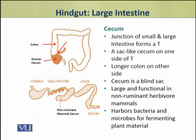In mammals, bacteria and microbes living in the cecum help digest plant materials. In non-ruminants, the stomach does not have a rumen for fermentation, so the fermentation process takes place in the cecum. Because of this, the cecum is relatively larger in non-ruminant herbivores.